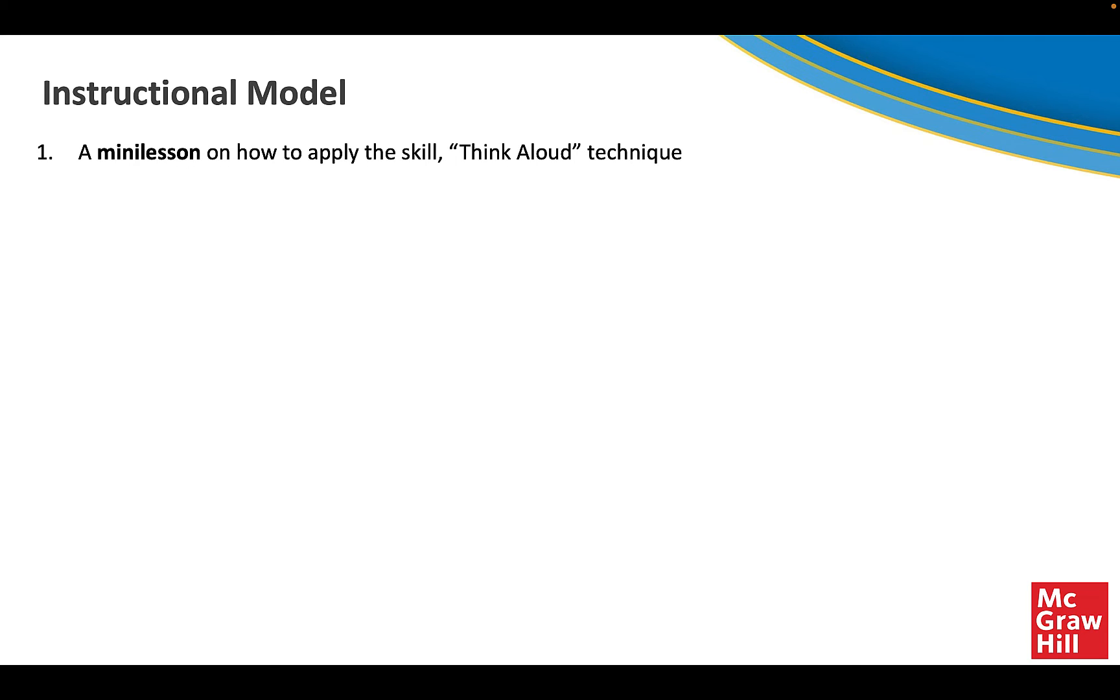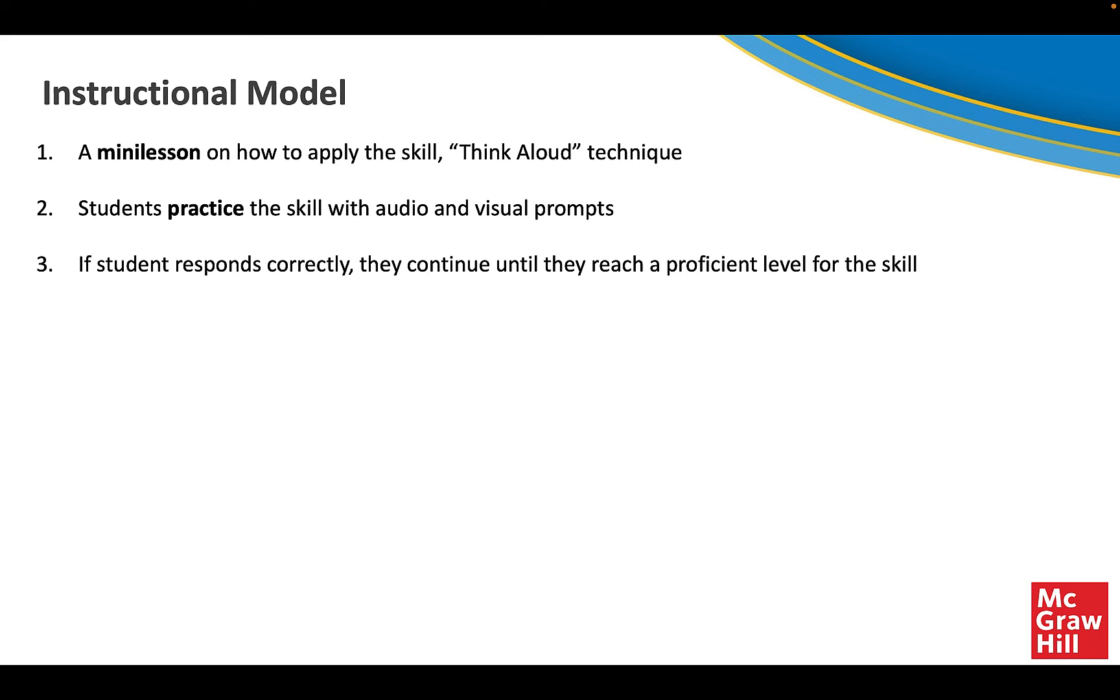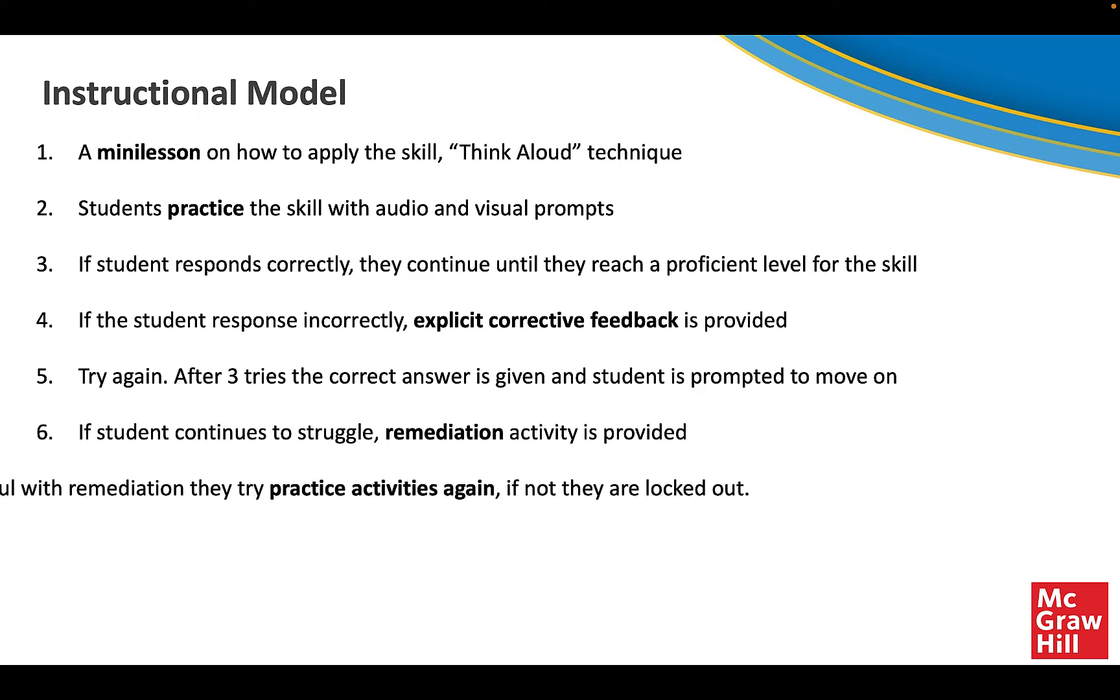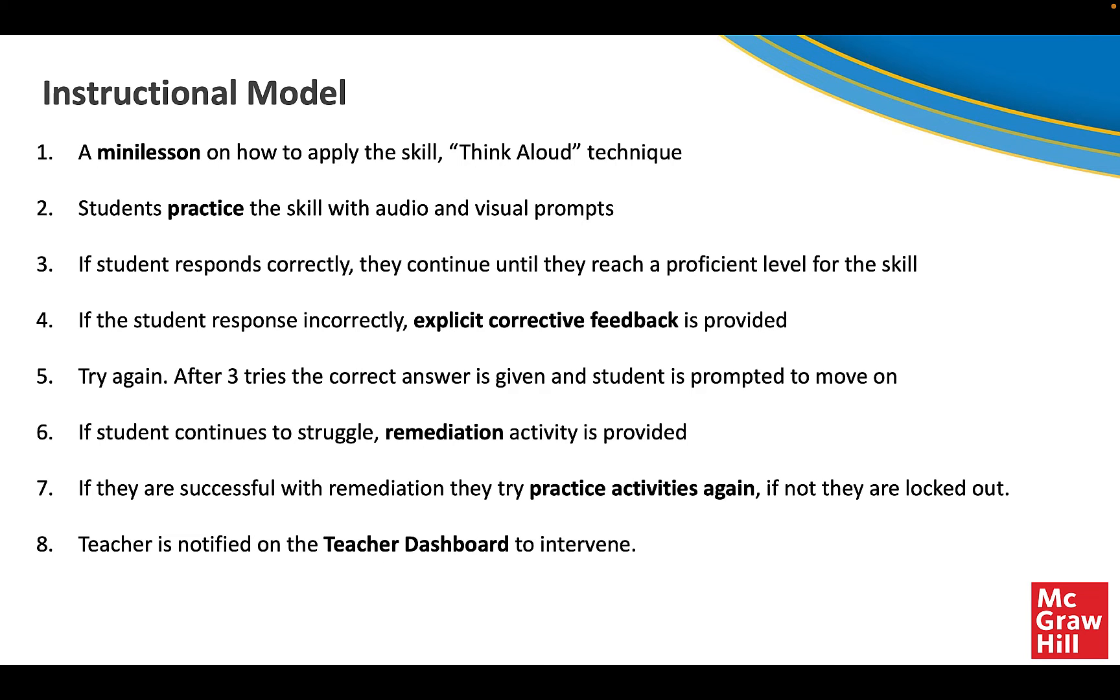As we mentioned earlier, you will see a very systematic explicit instructional model that begins with many lessons to apply the skill through that think aloud technique and students will practice these skills with audio and visual prompts. Based on how the student responds, they will continue until they reach a proficient level of the skill. If the student responds incorrectly, corrective feedback is provided. After three tries, the answer will be given and the student is prompted to move on. If the student continues to struggle, remediation is provided. If they are successful with remediation, then they try some new additional practice activities. However, if they are not successful, they will be locked out and the teacher will be notified through those teacher dashboard reports to intervene.